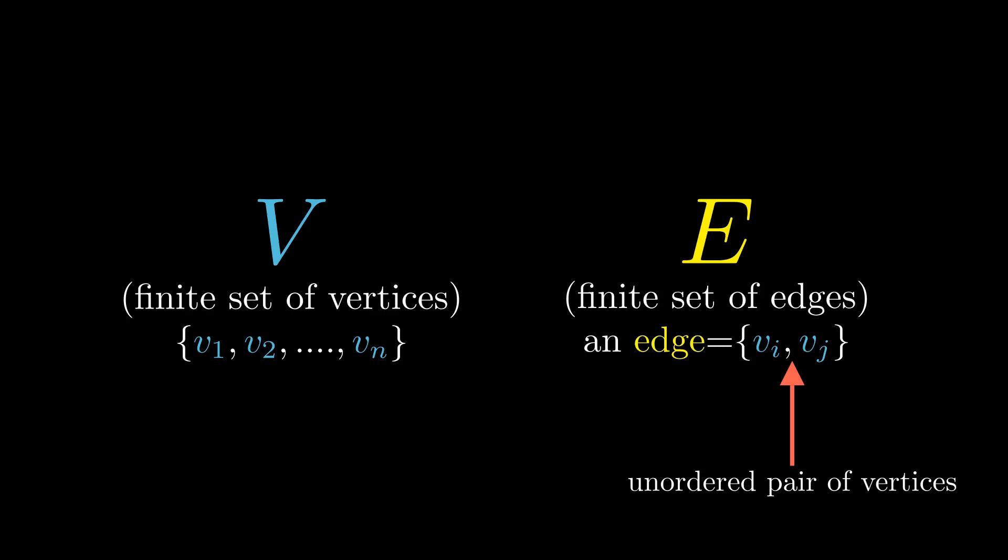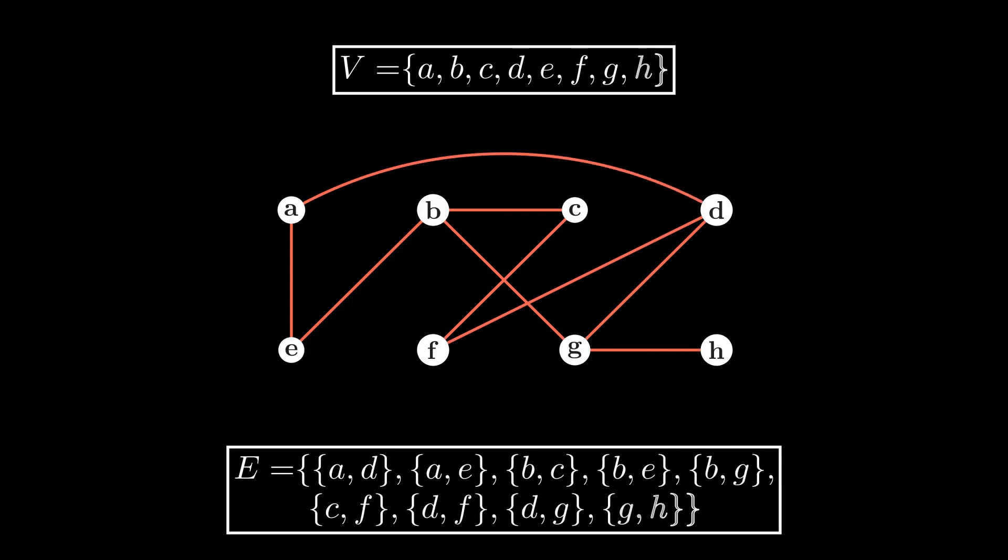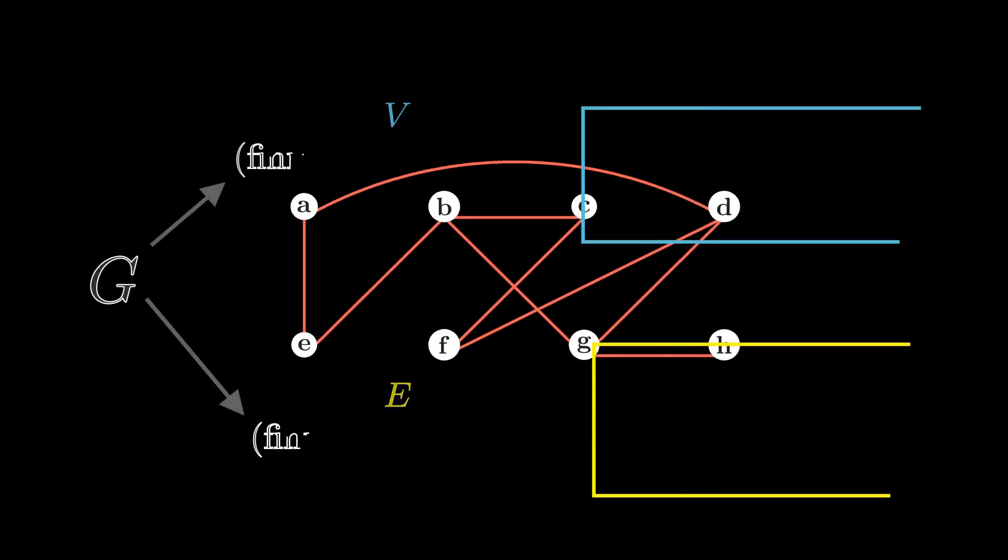For example, the set V might be A, B, C, D, E, F, G, all of these are vertices. And the set E might be the set of edges connecting A to E, B to C, B to E, and so on. Together, V and E make the graph G.